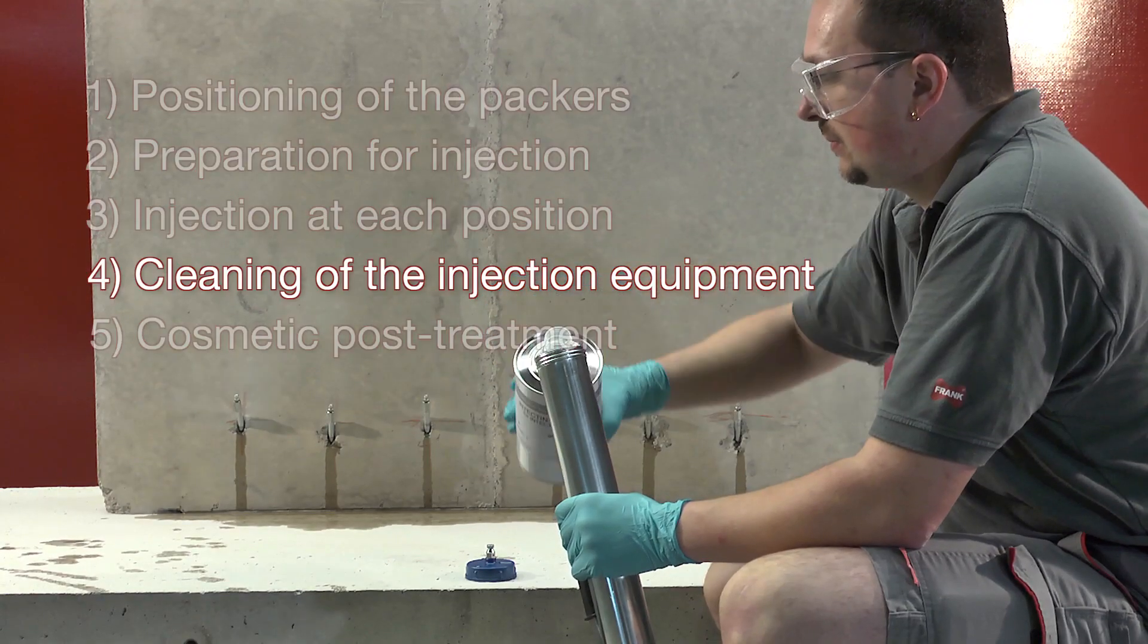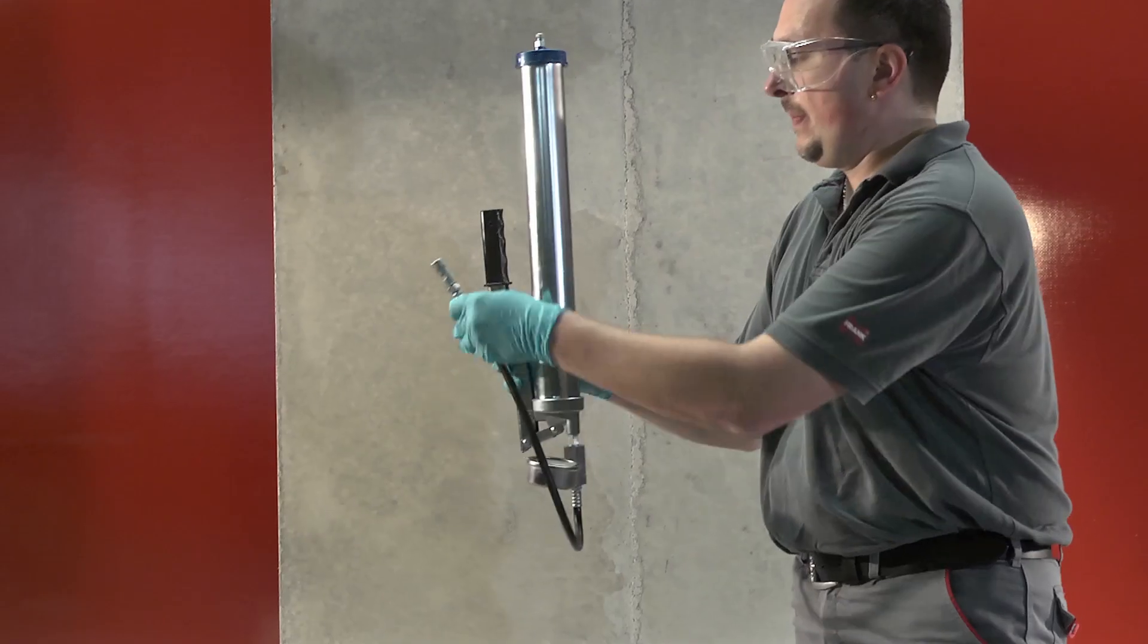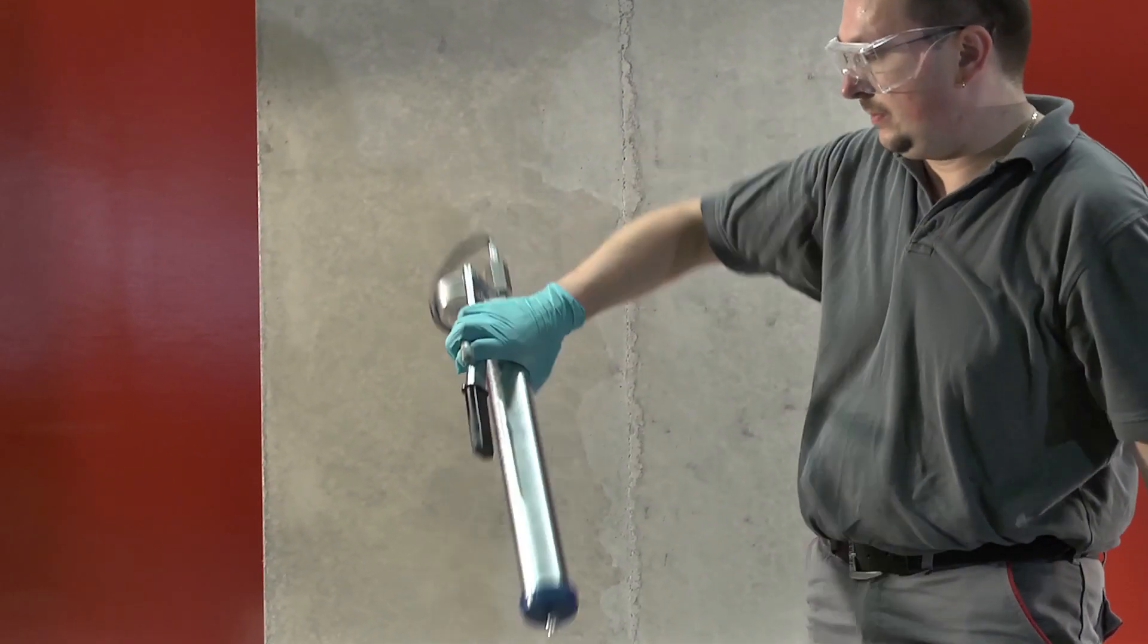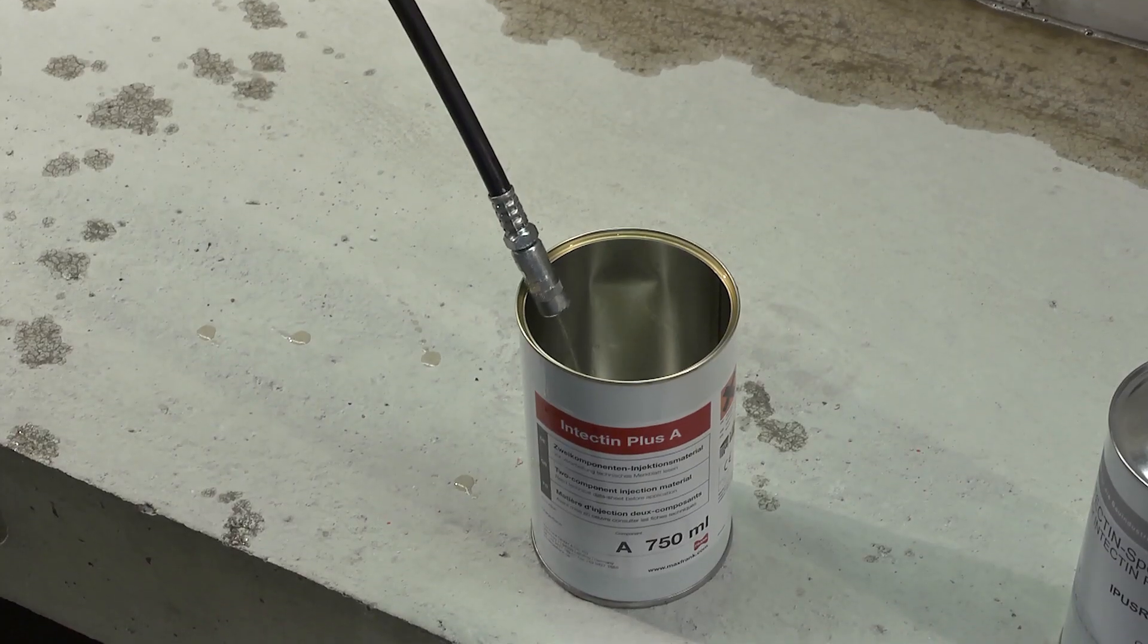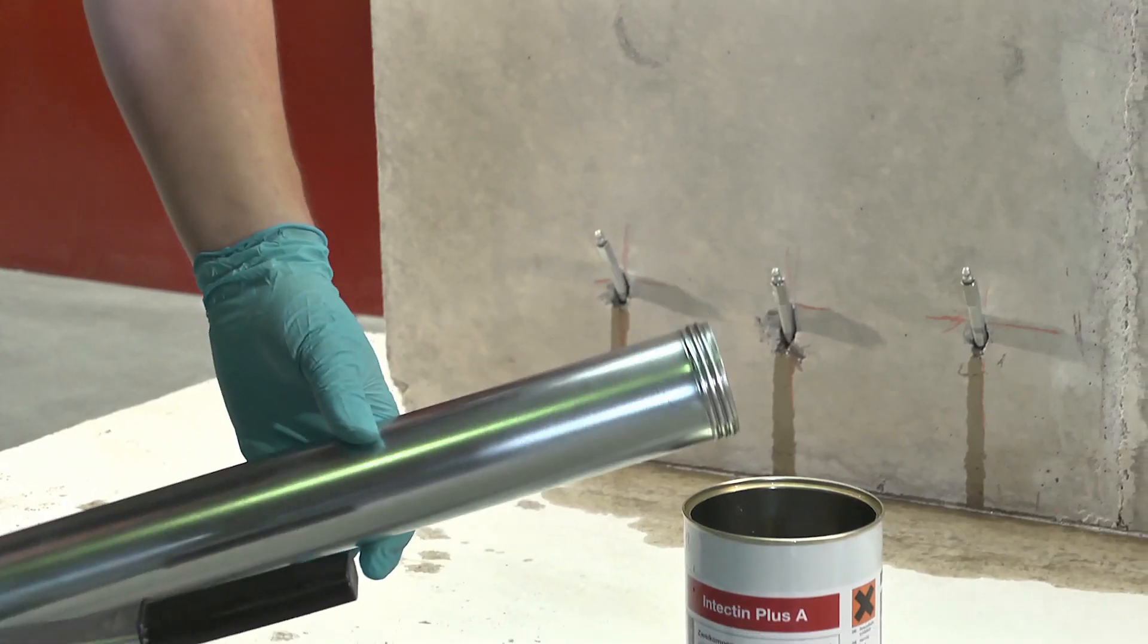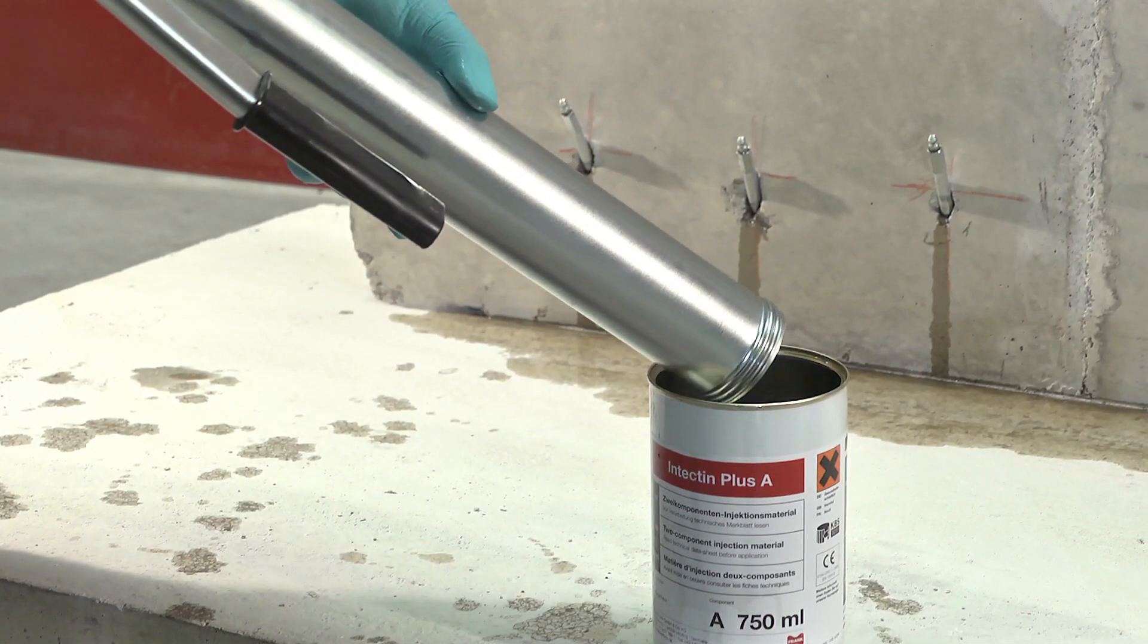Depending upon circumstances, it may be necessary during the injection process to clean off any buildup of resin residue on the impeller mixer and pump using Intectin Special Cleaner. The final cleaning in phase 4 contributes to the durability of the tools.